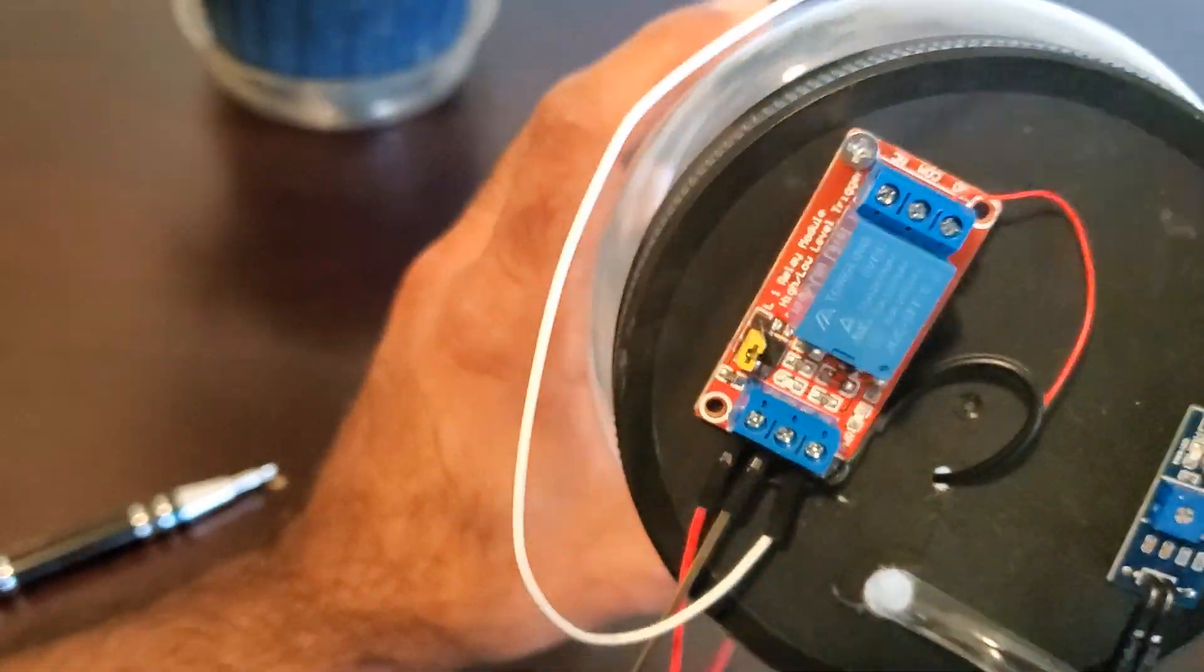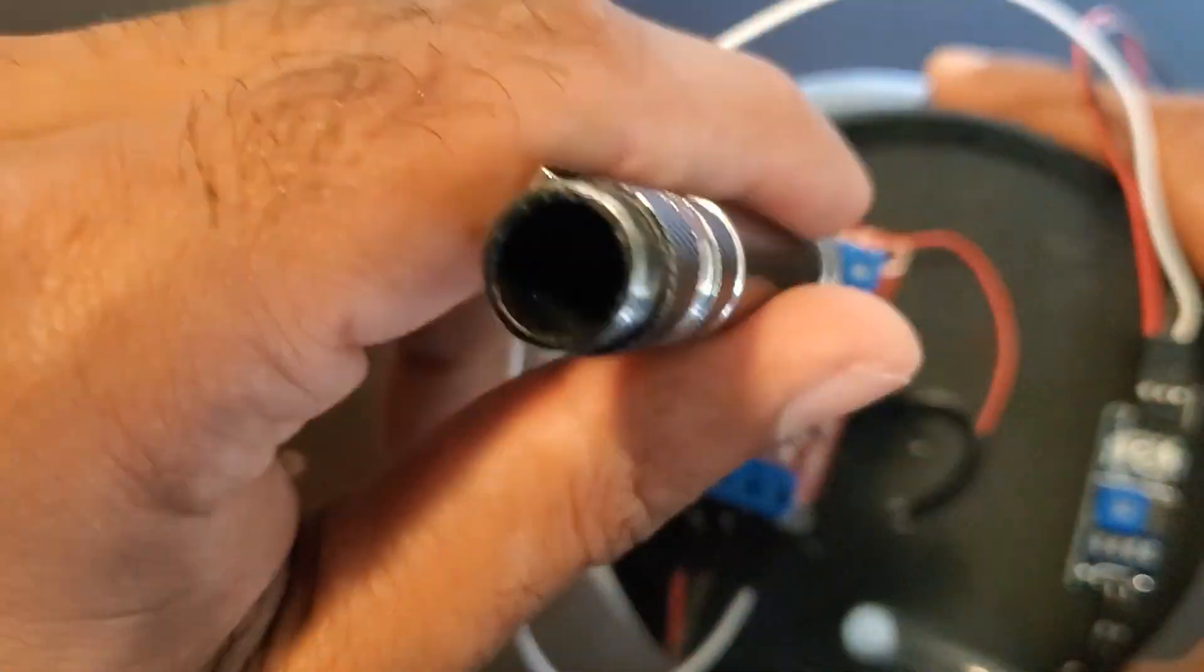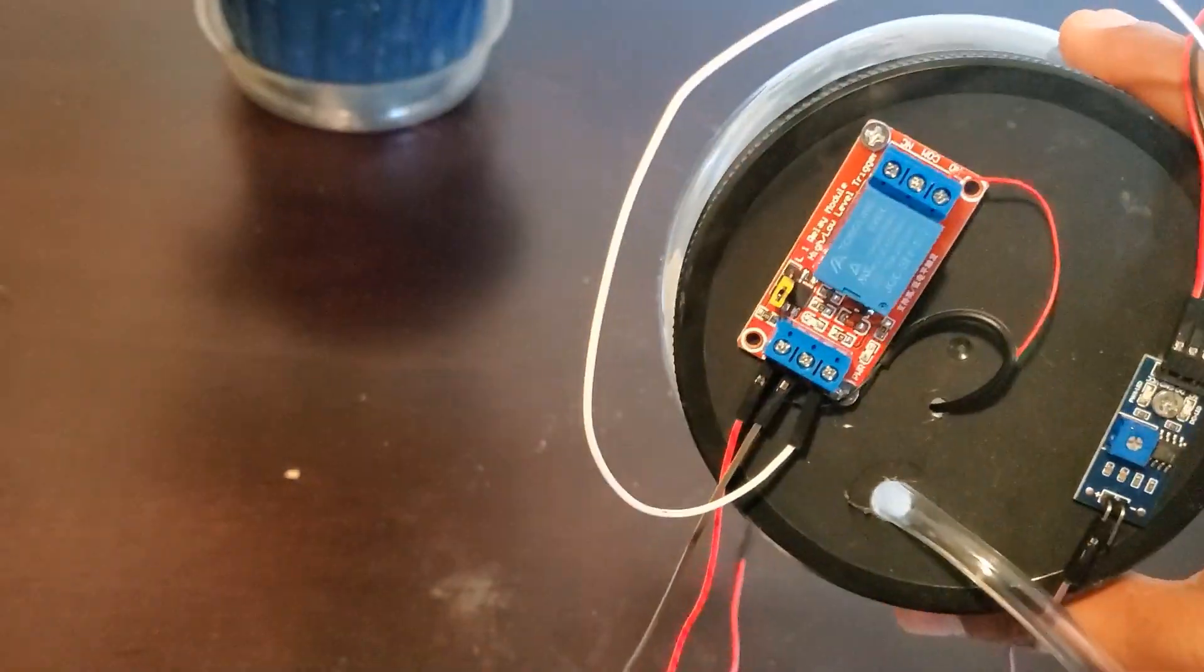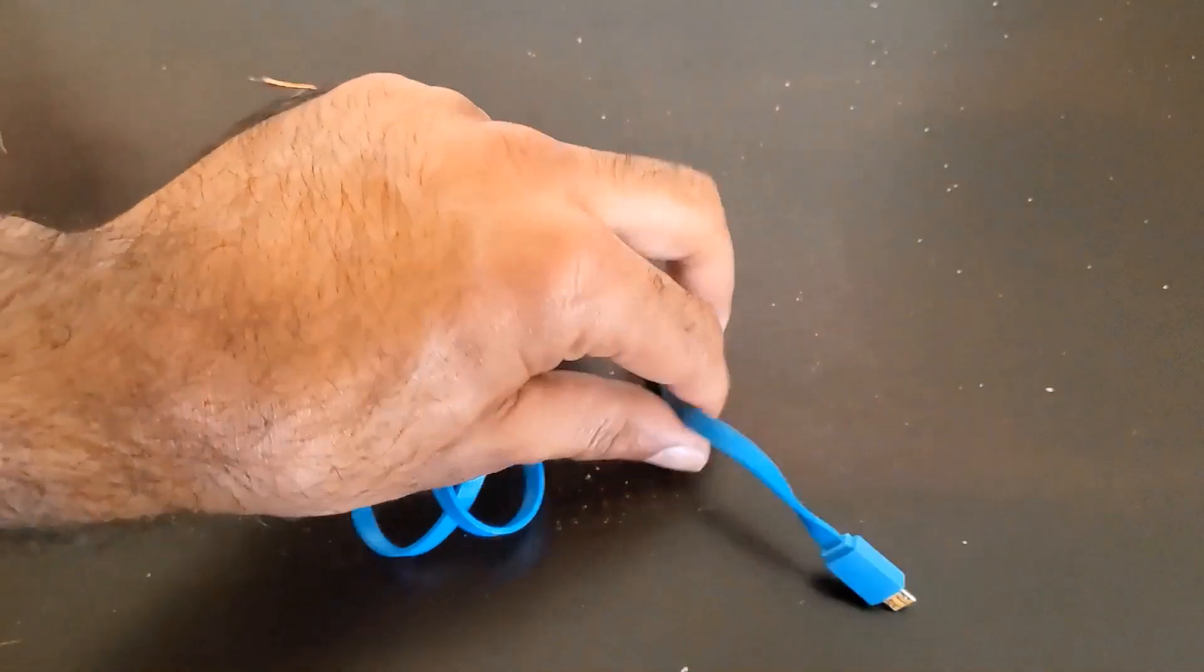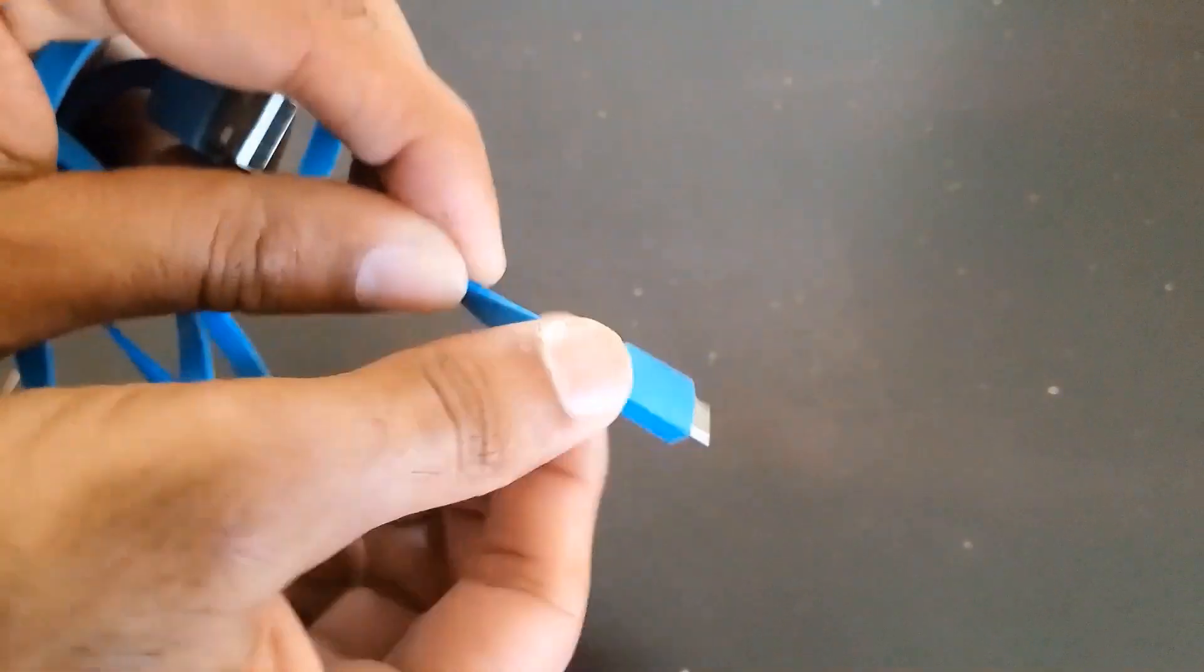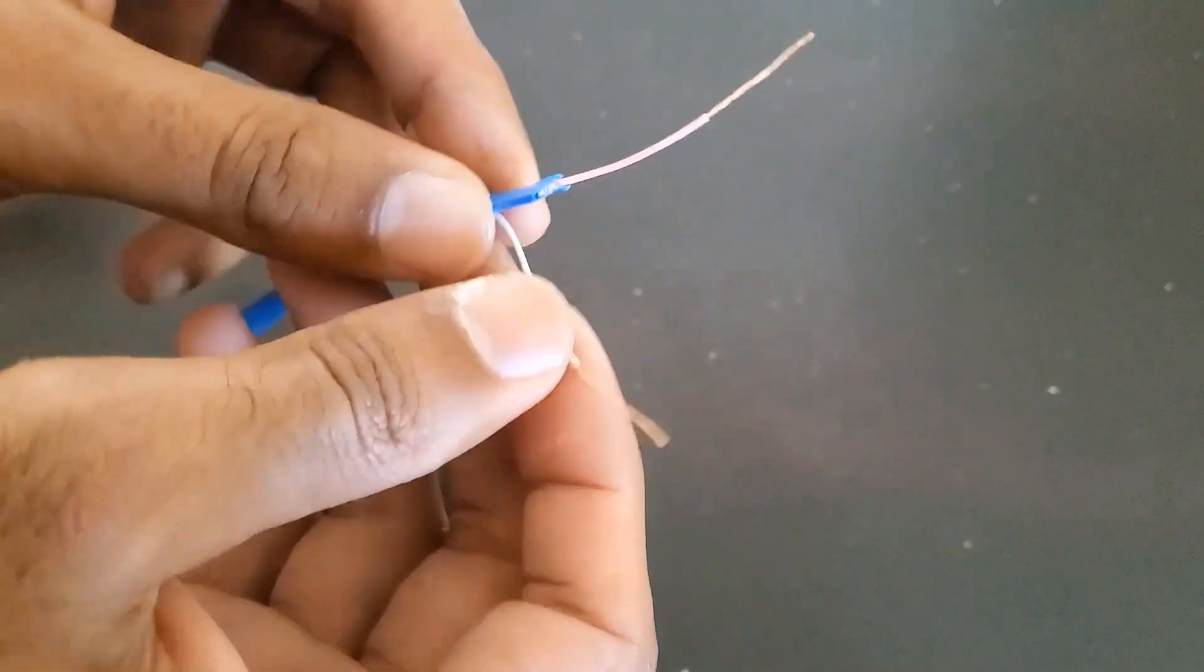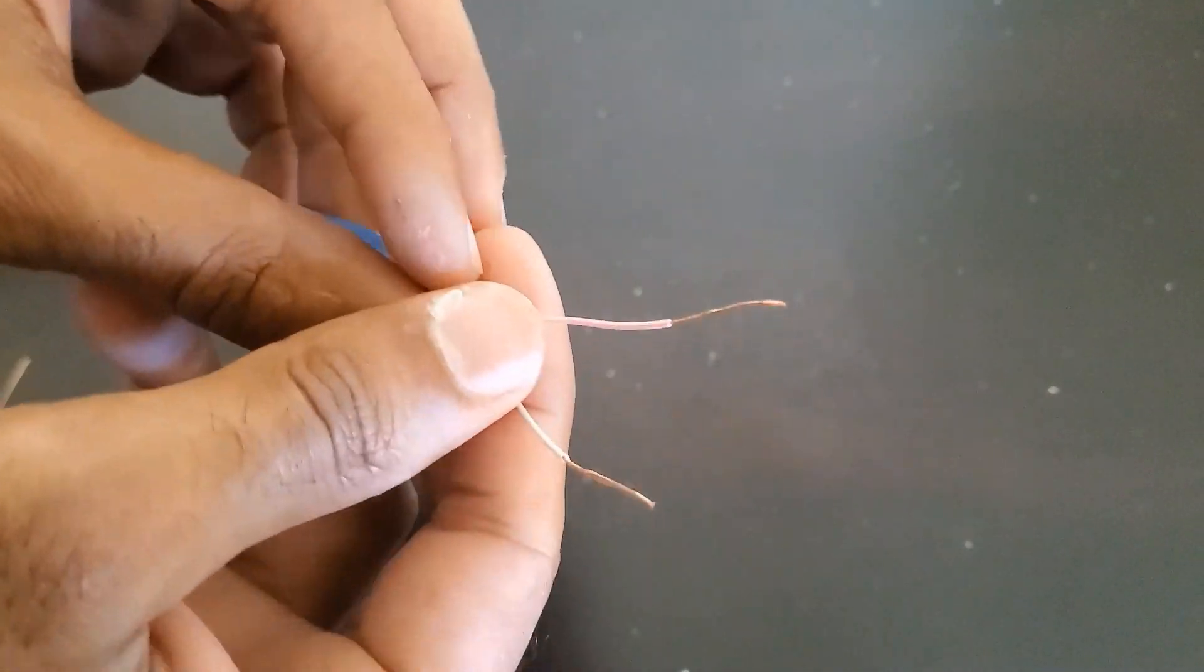Connect the red wire coming from the pump to the normally open contact of the relay, then add a red jumper wire to the common of the relay. Then we need to take our USB cable and cut off the smaller terminal and peel back the wiring. The red wire will be the positive and the white wire in this case will be the negative.